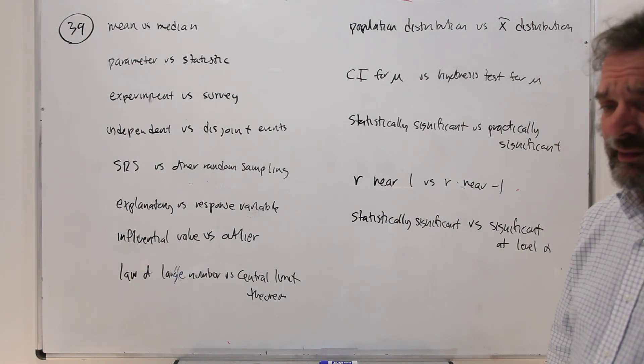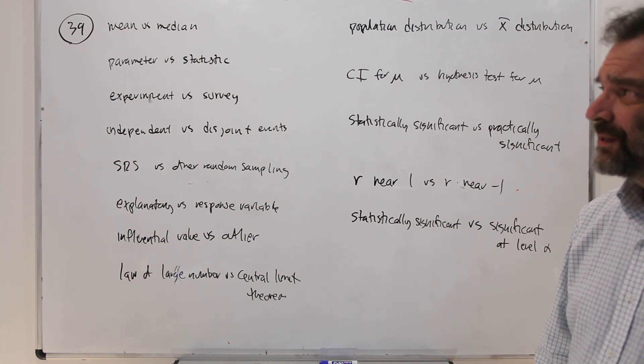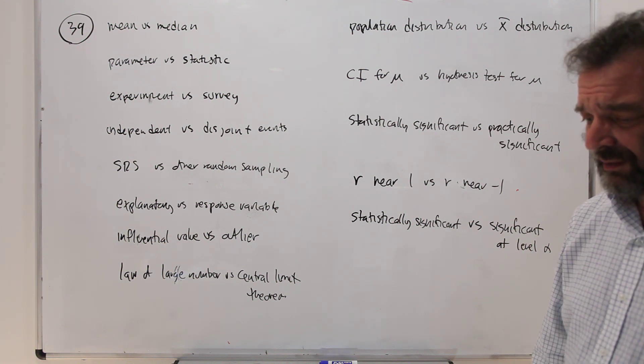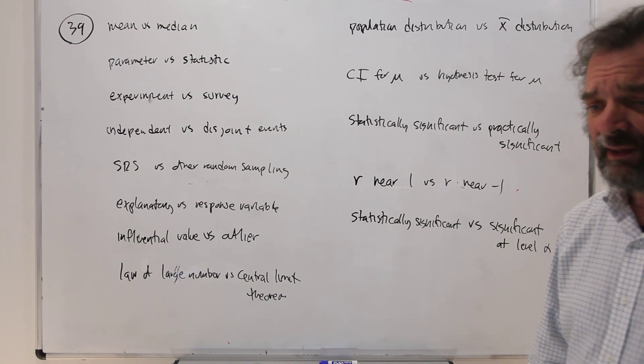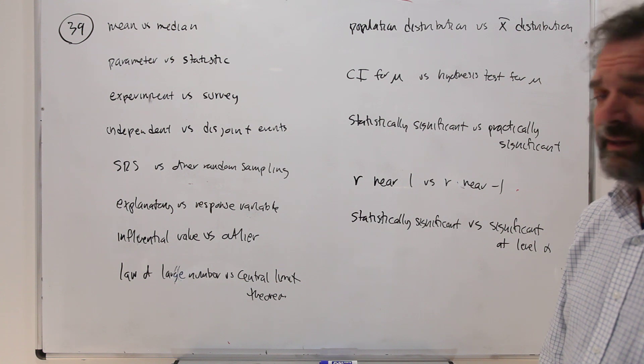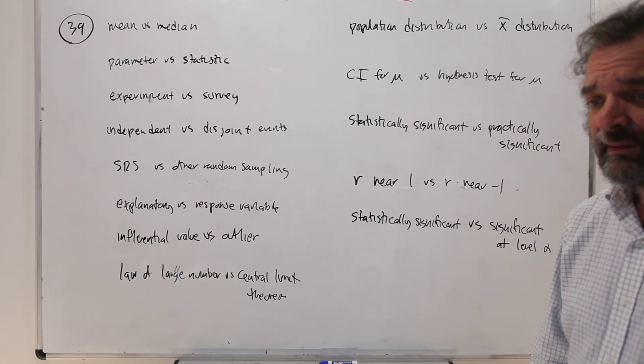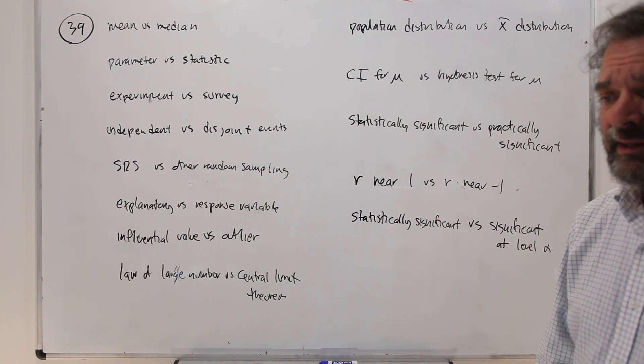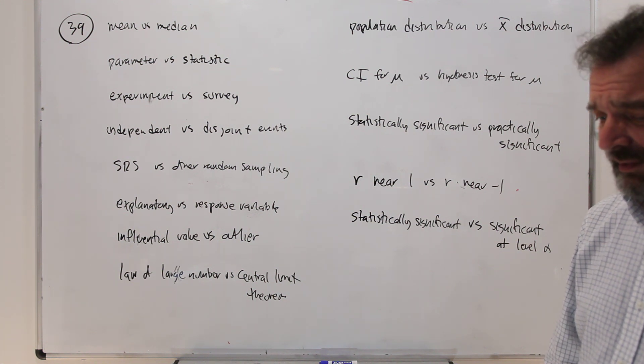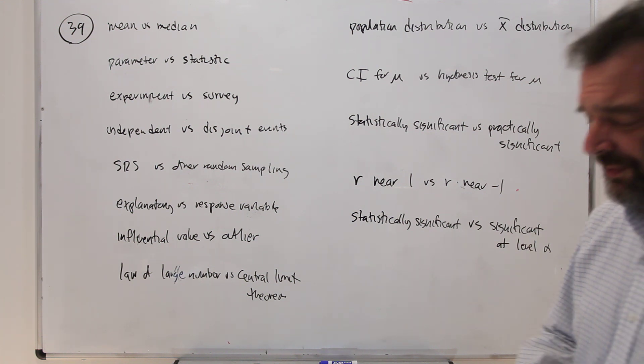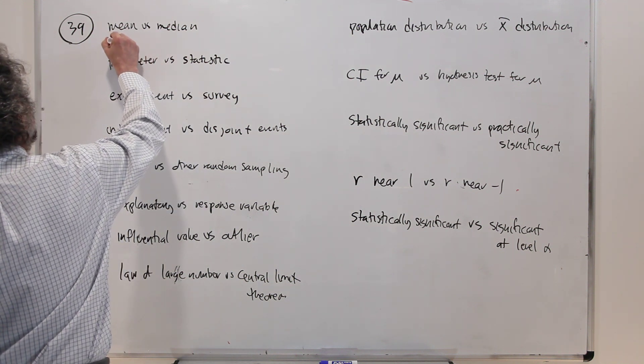So let's see we start with compare and contrast. So mean versus median. Now what does that mean? Well they're both measures of center and so one of them is the average and the other one is the center in terms of halfway along the data set if you arrange the data in order. So we know how to compute it. Maybe that's not important. Maybe we say we use the mean. So the measures of center.